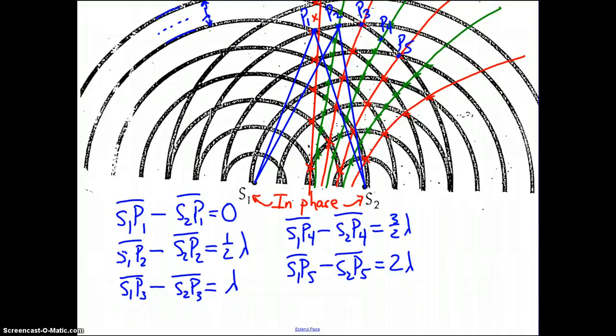So you can see, continuing on, if we were to continue on, P6 would have a path difference of five halves or two and a half wavelengths, P7, line segments drawn to it, would have a path difference of three whole wavelengths.